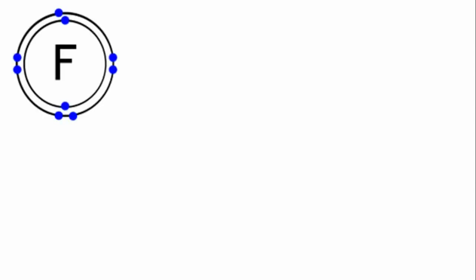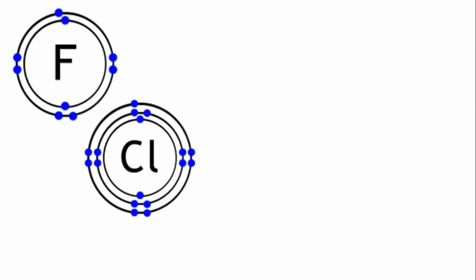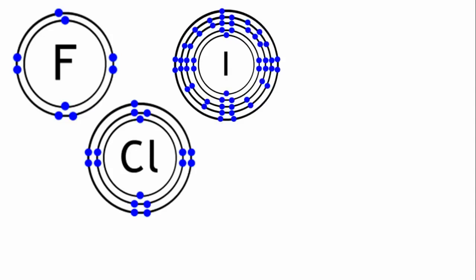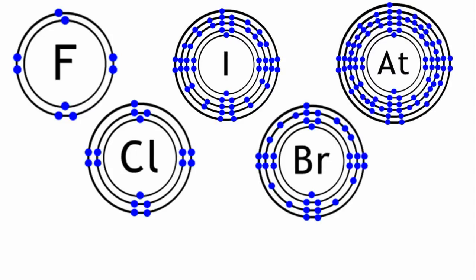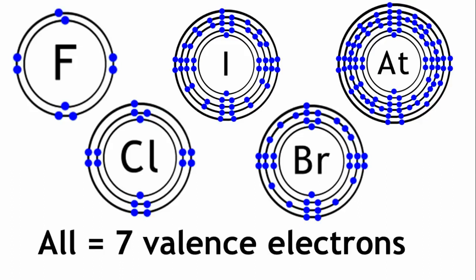Fluorine, chlorine, iodine, bromine, and astatine. They all have 7 electrons in their outermost shell and all exhibit similar chemical characteristics.